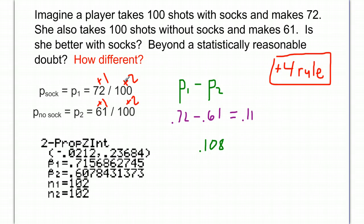Now it's not exactly 0.11 because we had to do the plus 4 rule, but it's pretty close. 10.8% and 11% are obviously very close.